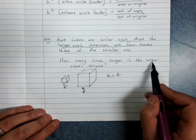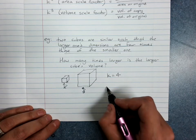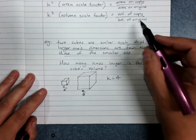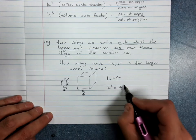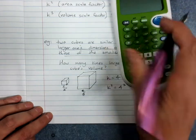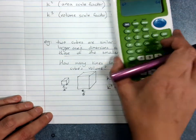How many times larger is the larger cube's volume? This is asking for the volume scale factor, k cubed. K cubed will be four cubed. Quite welcome to get your calculator out to work out four cubed. It's 64.